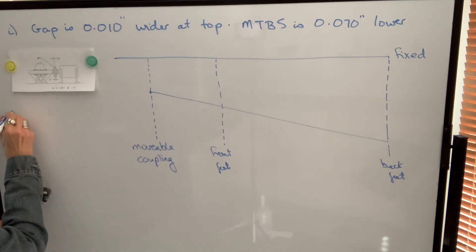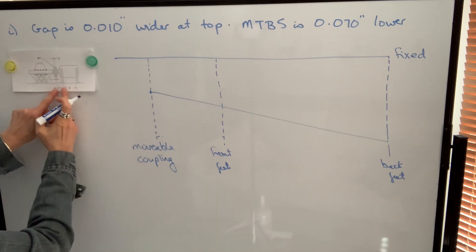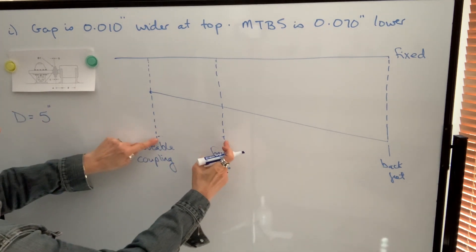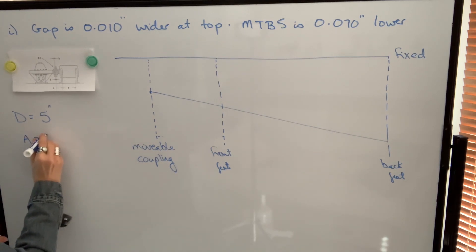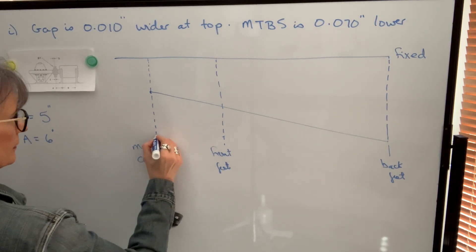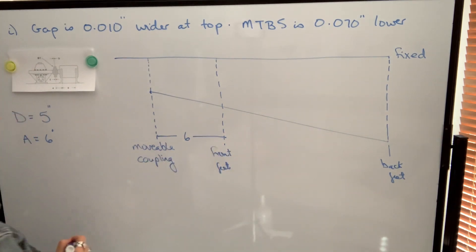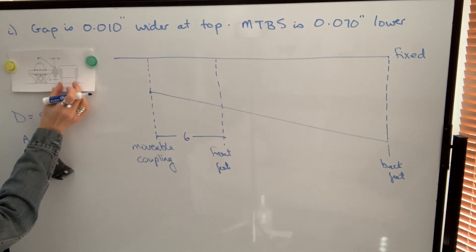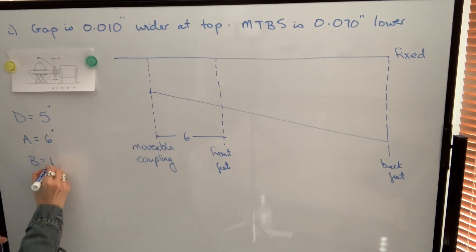The diameter of the coupling is five inches. A is the distance from the movable coupling to the front feet, and that distance is six inches. B is the distance between the front feet and the back feet, and that distance is eighteen inches.